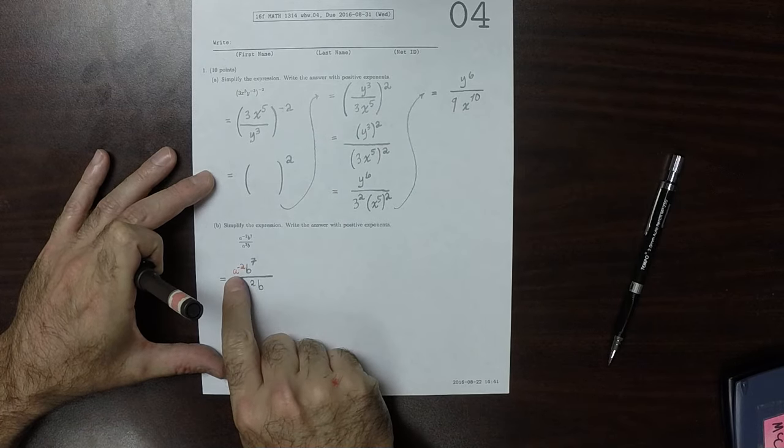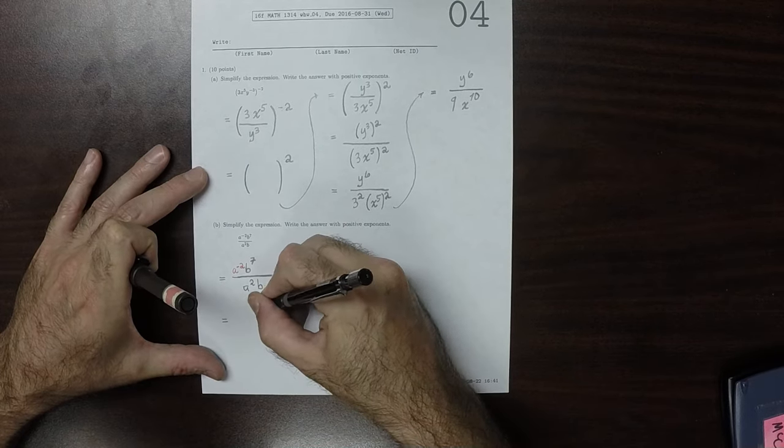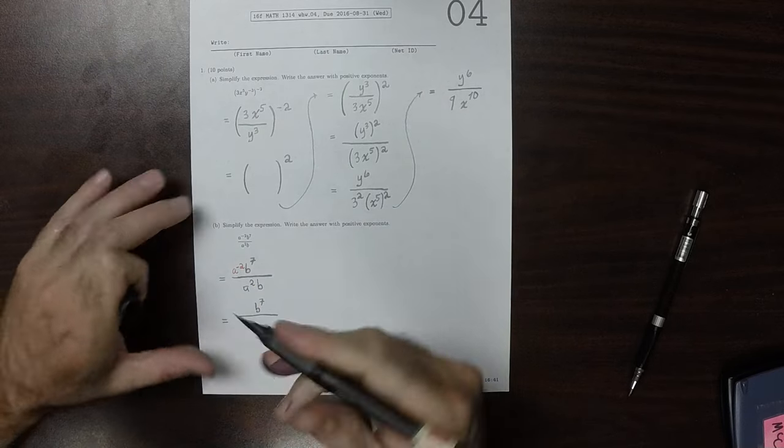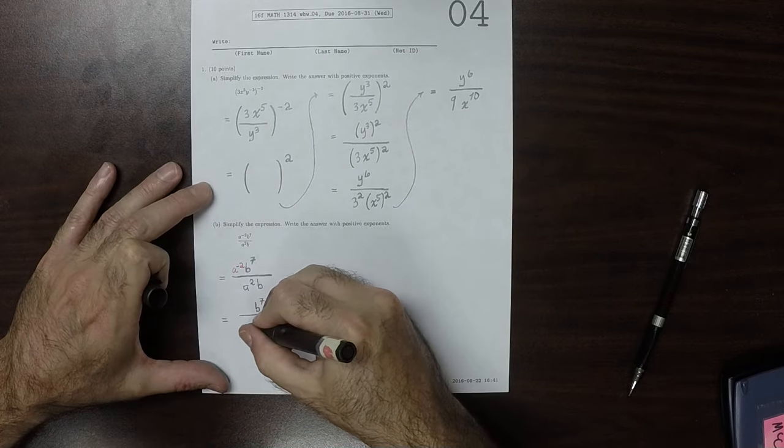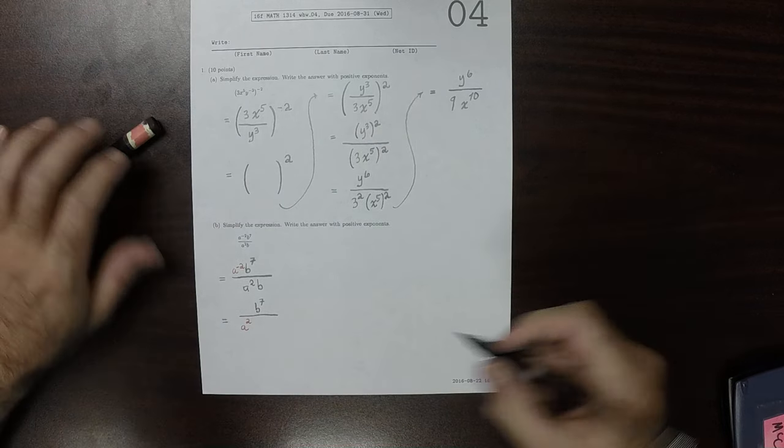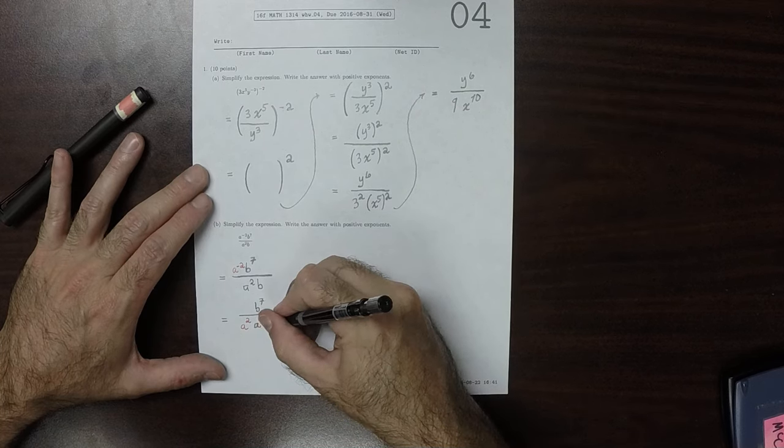So, now I'm going to take this red a to negative 2 and move it to the denominator. So, this would be b to 7 over, moving that a to negative 2 to the denominator makes it a to 2. And here's the other a to 2, b.